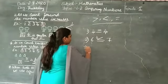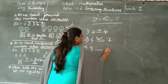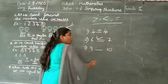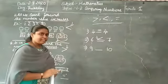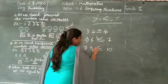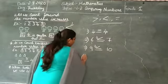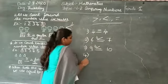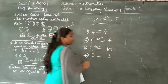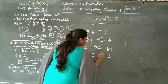And here 9 dash 10. 9 is less than 10. So the close point should be towards 9. Now, 3 dash 3 — both values are same, so we should use equal sign.